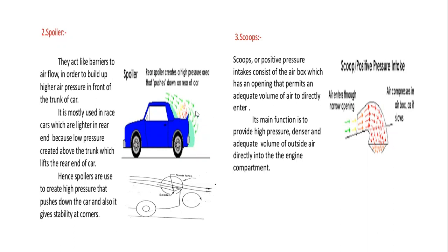Another method is scoops, also called positive pressure intakes. These consist of an air box with an opening that permits an adequate volume of air to directly enter the engine. Their main function is to provide high-pressure, denser air and an adequate volume of air directly into the engine. This is also one of the factors for controlling aerodynamic balance.